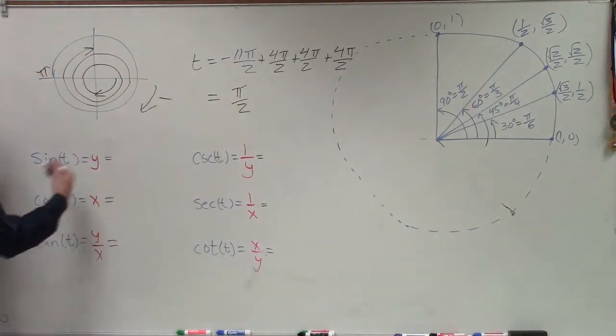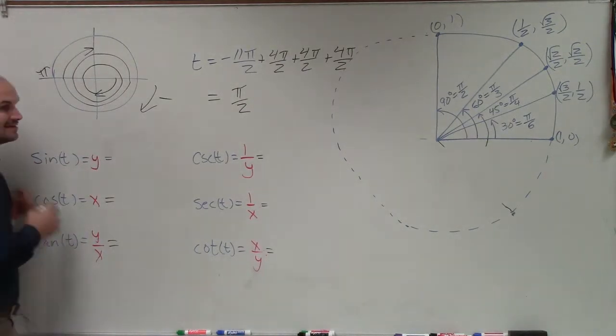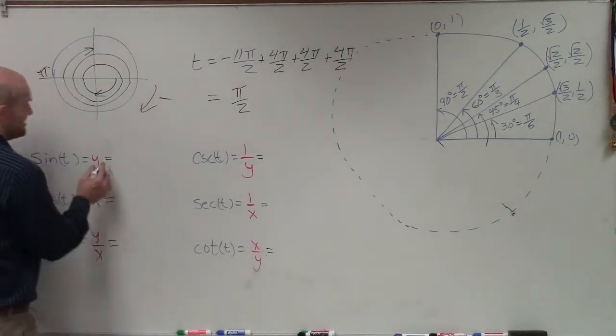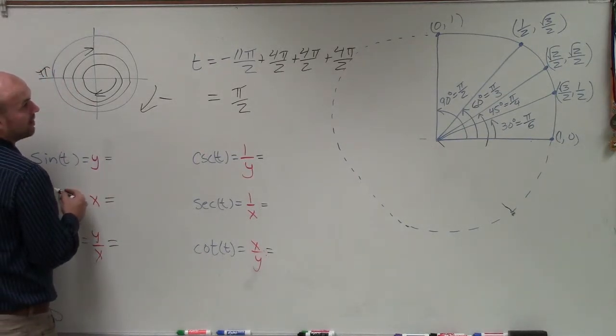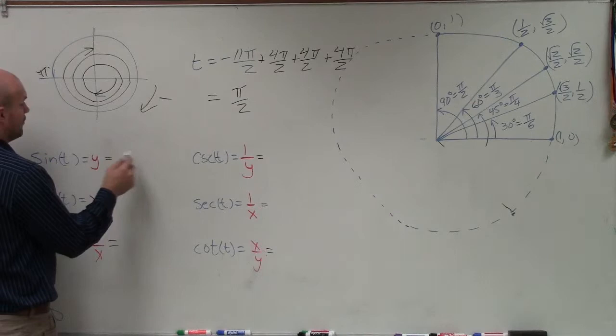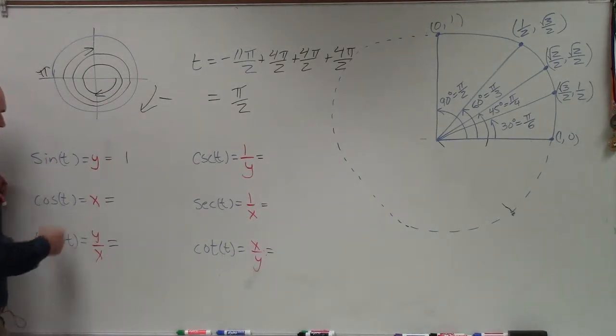To evaluate the sine function, remember the sine of our angle t is represented by the y-coordinate of the point where it intersects. So y equals 1. Therefore, sine is our y-coordinate, which is 1.